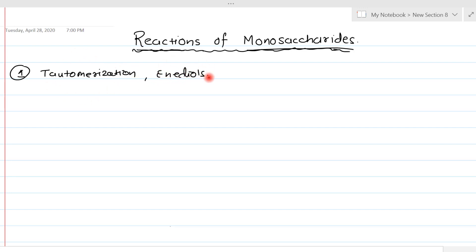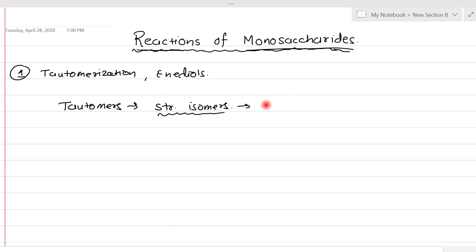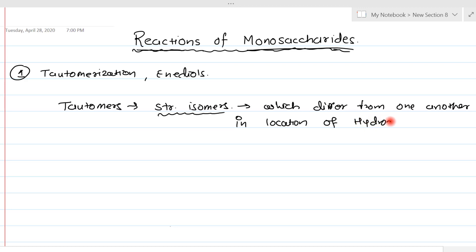Before we discuss about tautomerization and enediols, let us first understand what is meant by tautomers. Tautomers are a type of structural isomers. Structural isomers have the same molecular formula but different three-dimensional arrangement of atoms. In such structural isomers, they differ from one another in the location of the hydrogen atom. When one tautomer is converted to another, we call that process tautomerization.